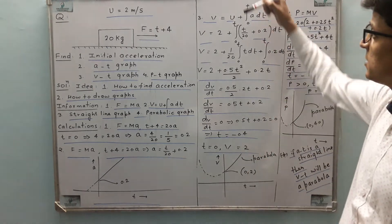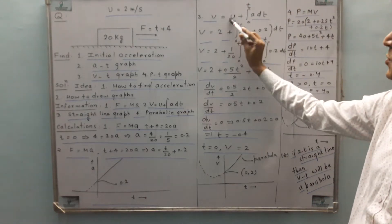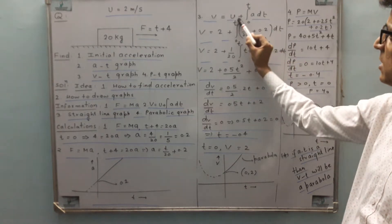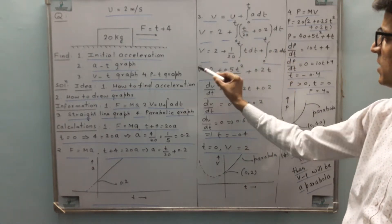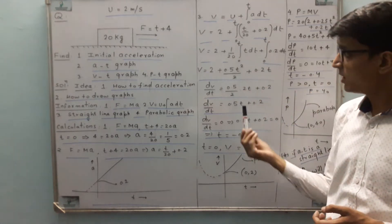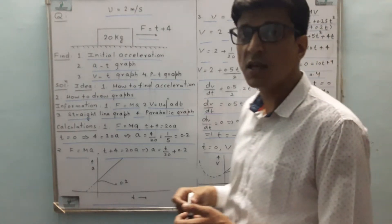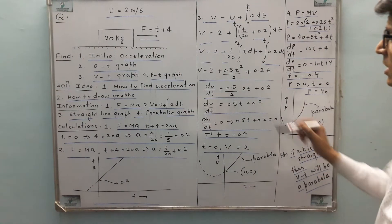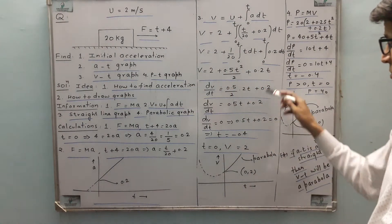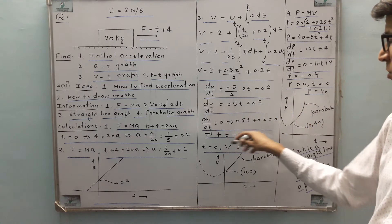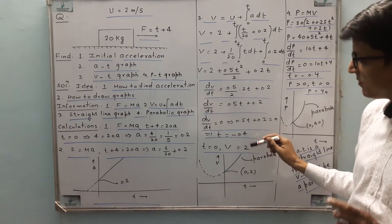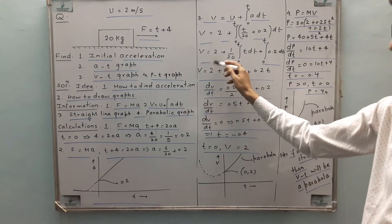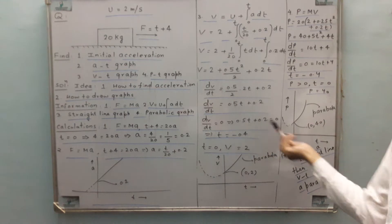Next, we know that v equals u plus integration a dt. So u is 2, a has this value, integration dt under the limit 0 to t. After solving we get this as v. Since this is a quadratic equation in t, we know that the graph is to be a parabola. Let's find the vertex of the parabola. For that, just differentiate velocity. You get this one and t equals minus 0.4. Obviously the vertex will be at t equals minus 0.4 and the value of v will be positive.